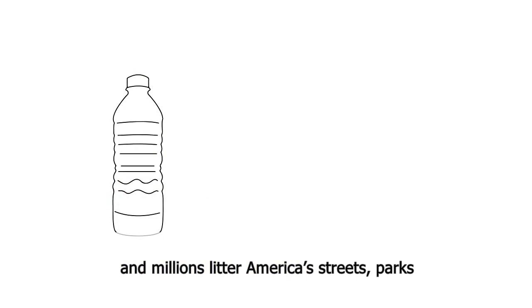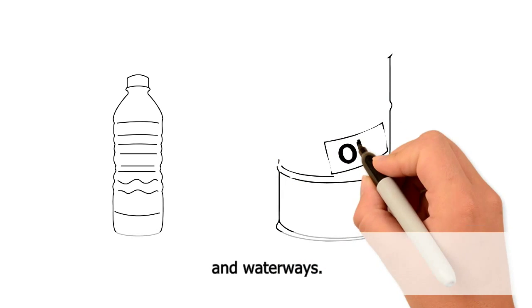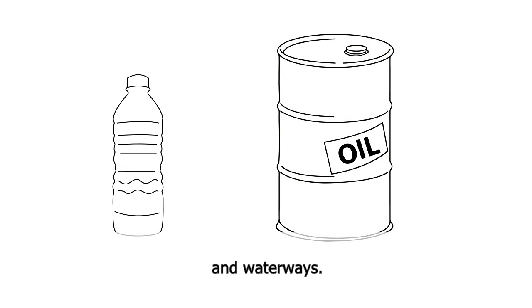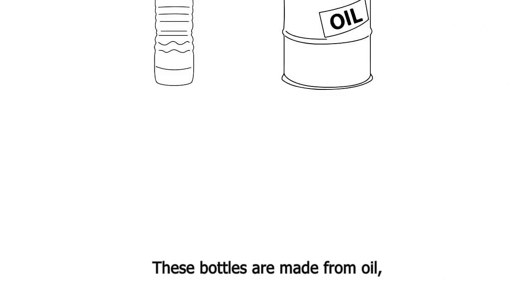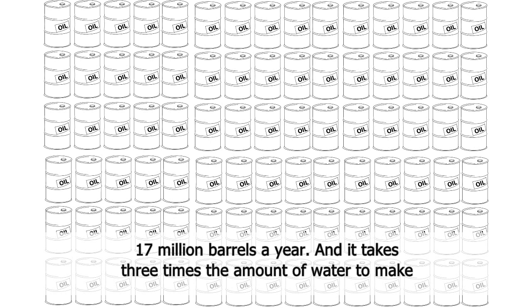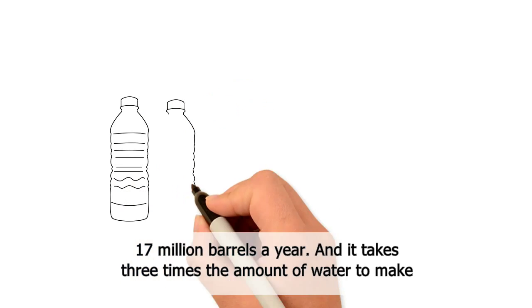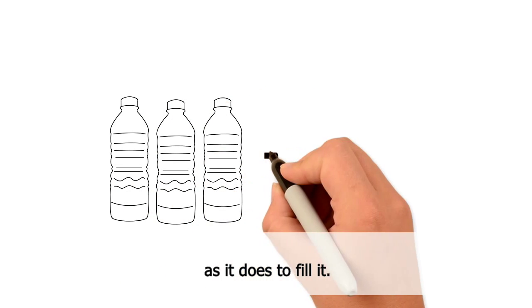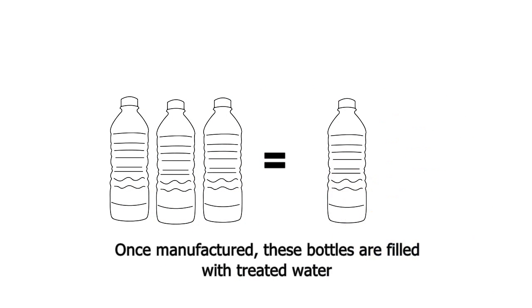Millions litter America's streets, parks, and waterways. These bottles are made from oil—17 million barrels a year—and it takes three times the amount of water to make the bottle as it does to fill it.